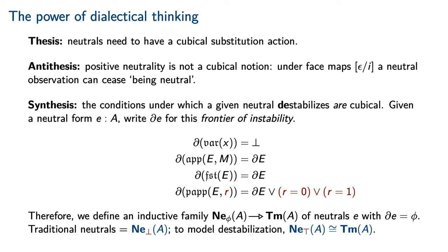Traditional neutrals, which are totally stable, are recovered in the case that φ is false.